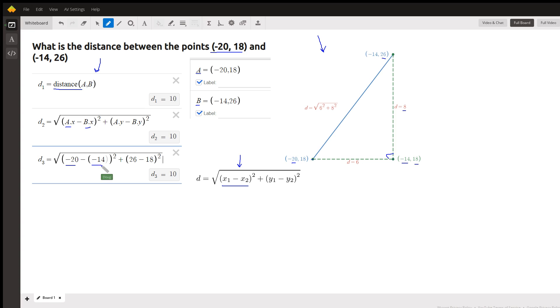there's the change in the x's squared plus the change in the y's squared. All three ways you get a distance of 10 units between those two points.